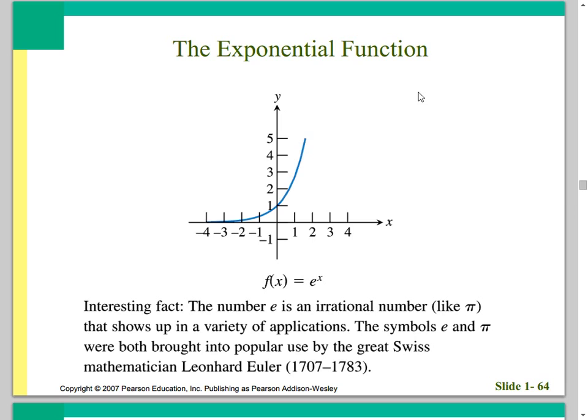Next is the exponential function, f(x) = eˣ, based on the number e, Euler's number. Like pi, it's an irrational number that shows up in a variety of applications. The symbols e and pi were brought into popular use by Leonhard Euler — pi has been around since Archimedes, but e actually represents Euler. It's approximately 2.71 or 2.72. If you graph f(x) = eˣ it looks like this, and it's great for modeling exponential growth like population models.